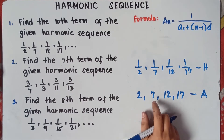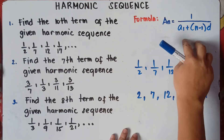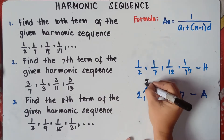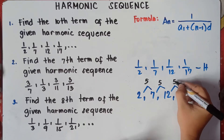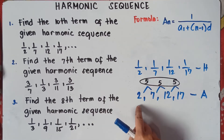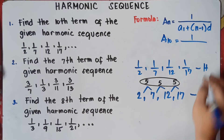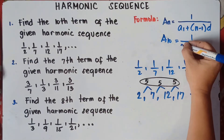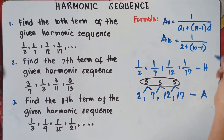Now we need to get the common difference to solve this. If given a harmonic sequence, you need to convert it into arithmetic sequence so that we can use this equation. Get the common difference: 7 minus 2 is 5. 12 minus 7 is 5. And 17 minus 12 is 5. Therefore the common difference is 5. We can use the formula since we already have the common difference and the first term.